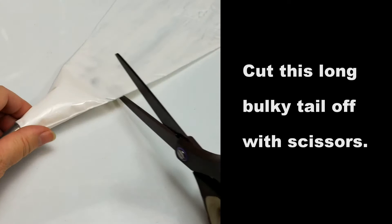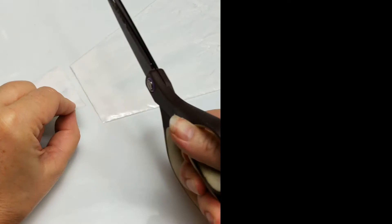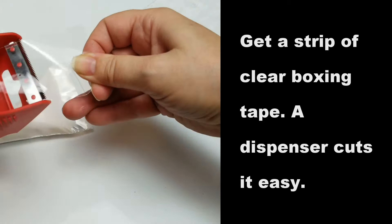Cut this long bulky tail off with scissors. Get a strip of clear boxing tape. A dispenser cuts it easy.